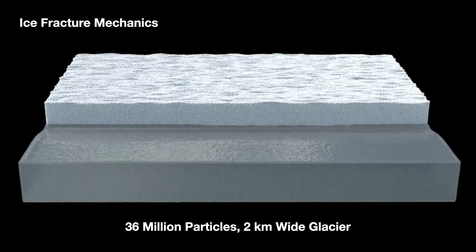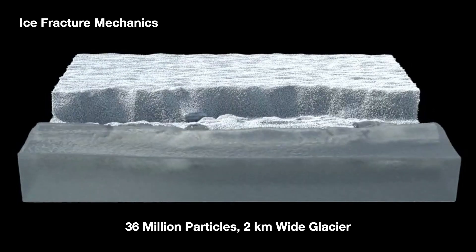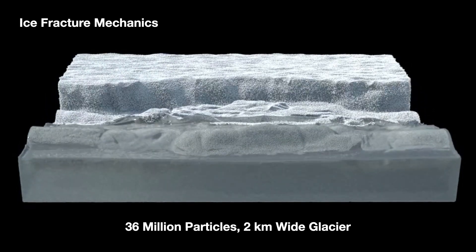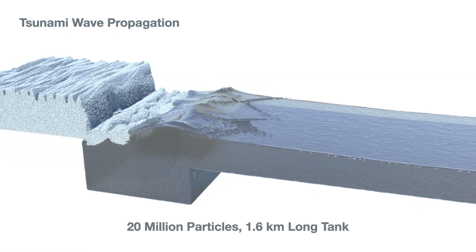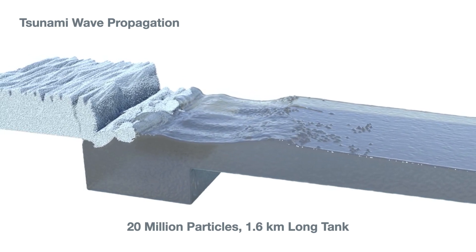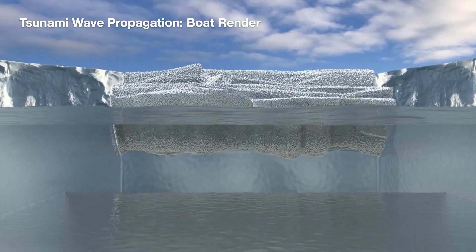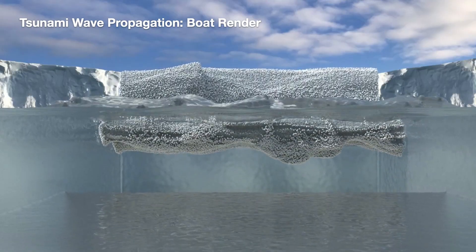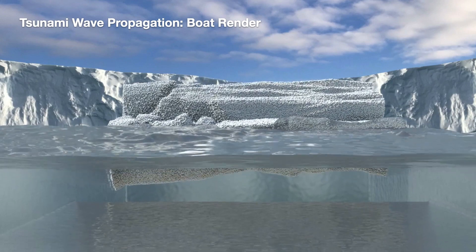Finally, we simulate a couple of large-scale 3D glacial calving events to fully illustrate the visual impact and intensity of the ensuing tsunami waves. First, we use 36 million particles to simulate this 2 km wide glacier to focus on the ice fracture characteristics. Then, we use 20 million particles to simulate this 400 meter wide glacier with a 1.6 km long water tank to illustrate the tsunami propagation in 3D. Finally, we show the same simulation again, rendered as if we were viewing this calving event from a nearby boat, giving both a sense of the wave motions as well as a view of the underwater icebergs.